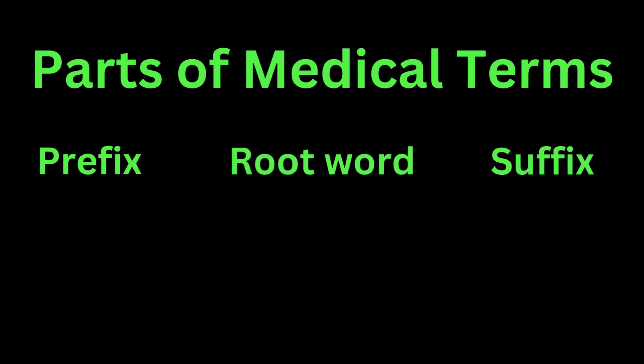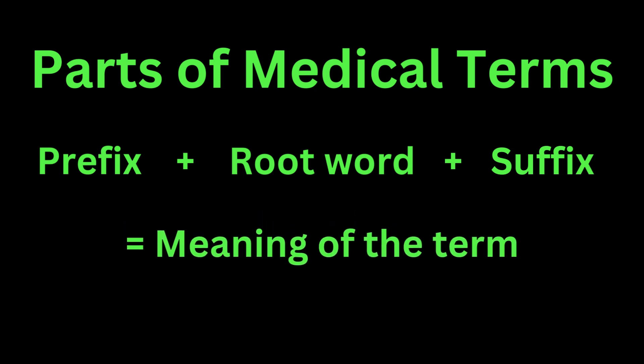Hello everybody. In this video we are going to discuss how to understand medical terminologies. Every medical term has three parts: a prefix, a root word, and a suffix. The individual meanings of the prefix, root word, and suffix can be put together to deduce the meaning of such terms. Let's try to understand some medical terminologies using this technique.